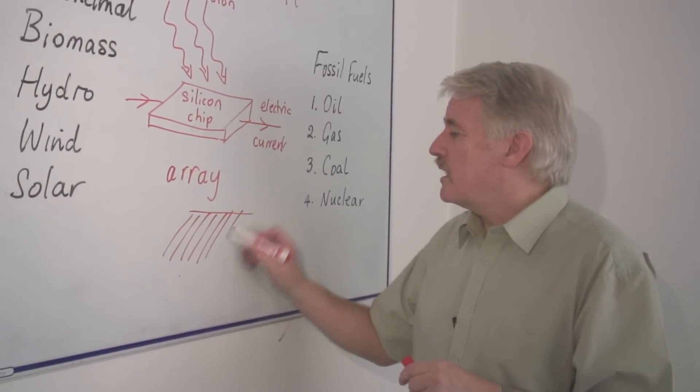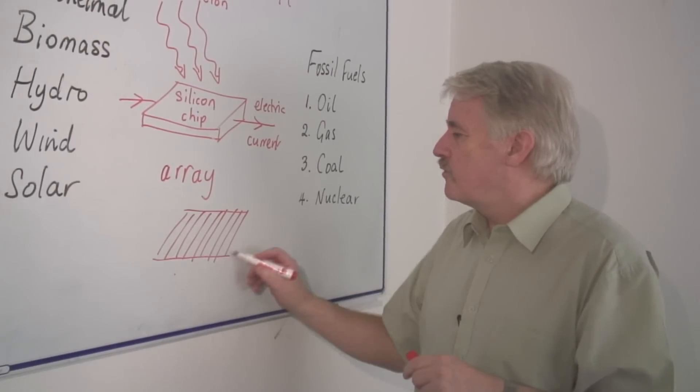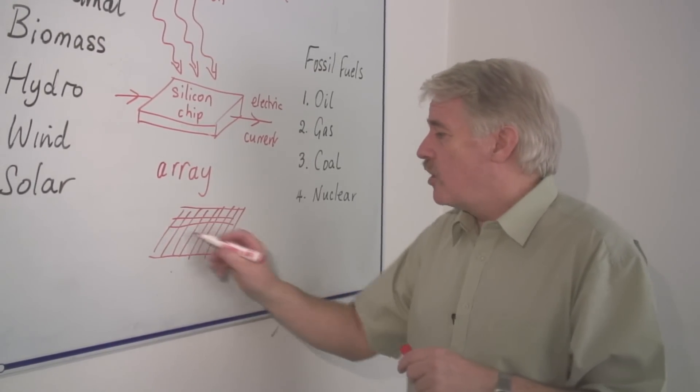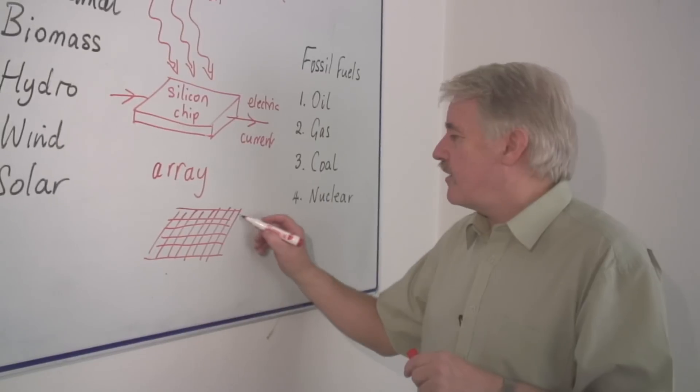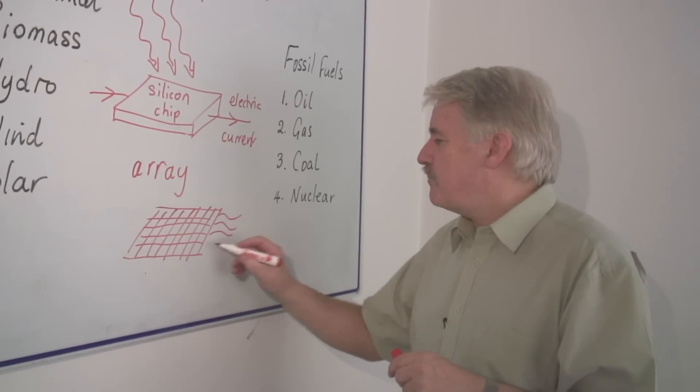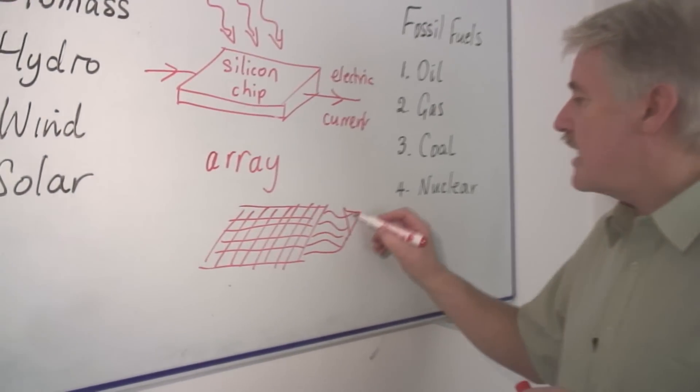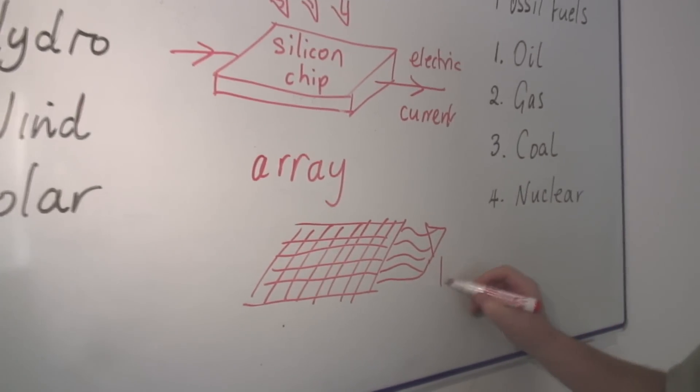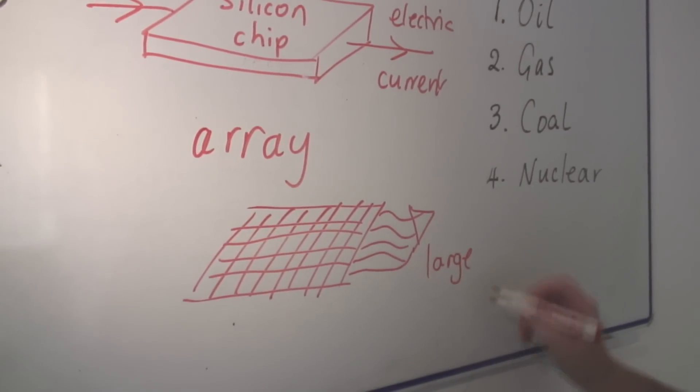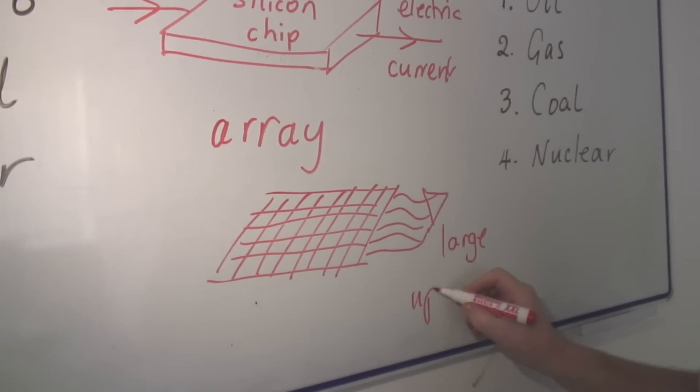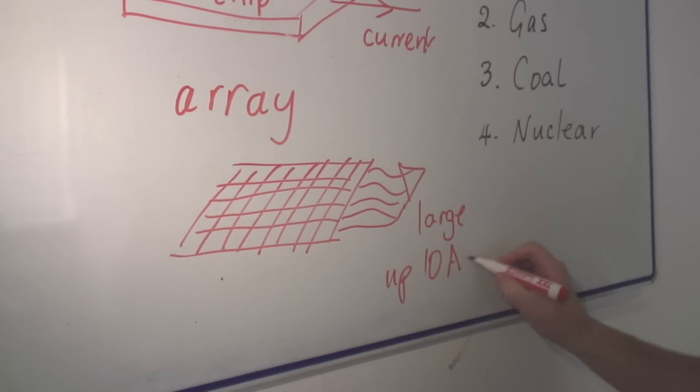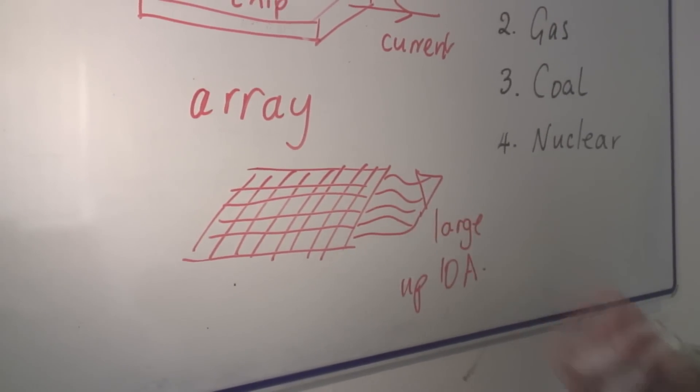And those can be placed, for example, on the roof of a house. And if they're all connected together, each one from a separate piece of wire, then you will find that the current out is quite large. You can get a large current up to 10 amps for a common household unit.